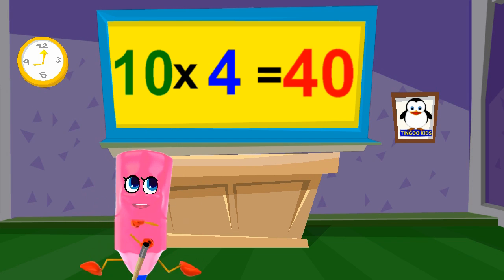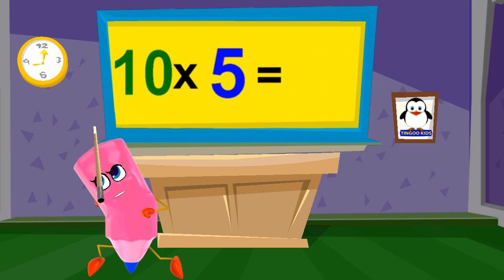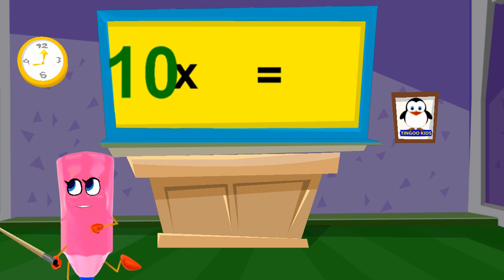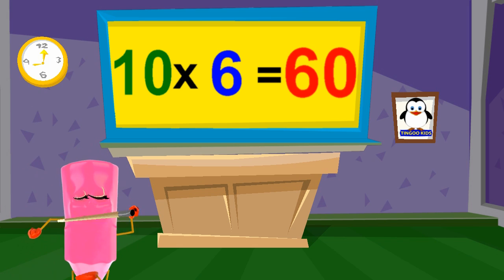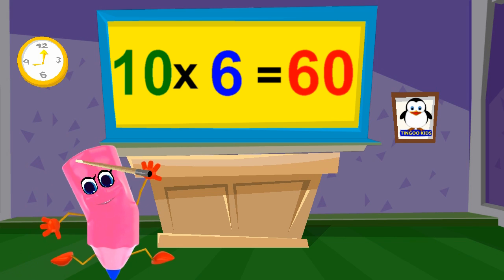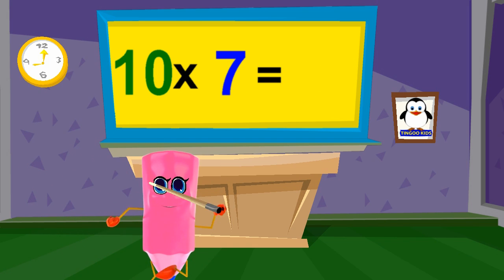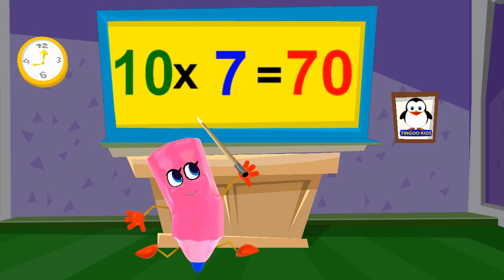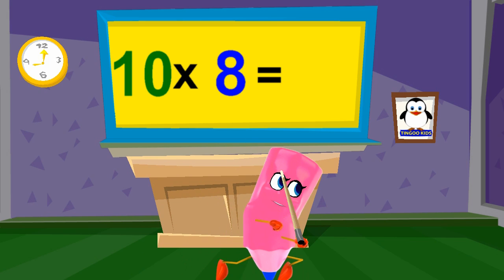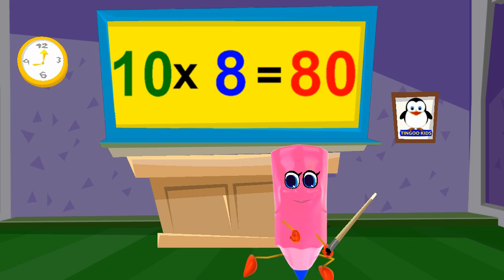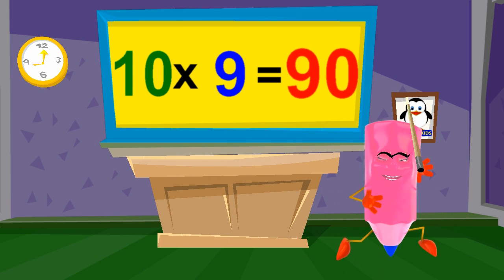Ten times five is fifty. Ten times six is sixty, ten times seven is seventy, ten times eight is eighty, ten times nine is ninety.